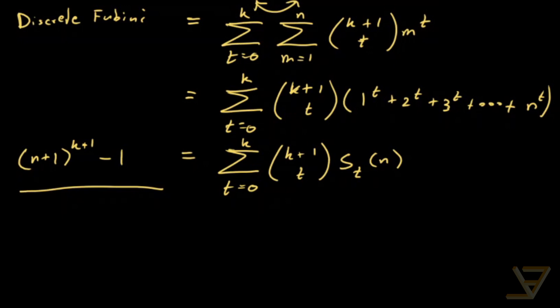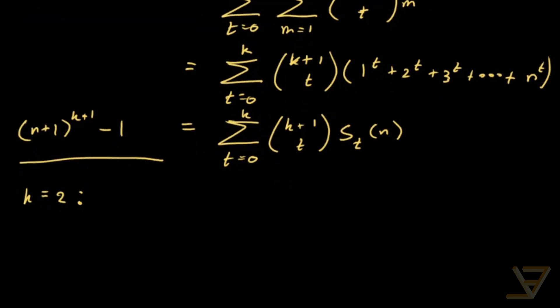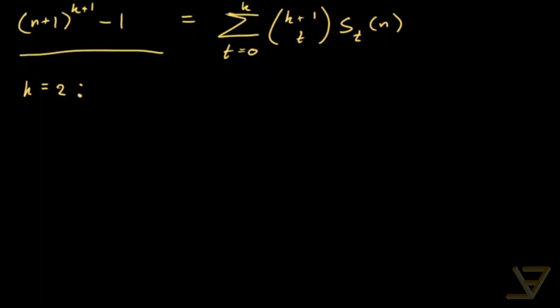Let's do an example to make it clear what's going on. Let's do k equals 2, because we already know the answers for k equals 0 and k equals 1. For k=0 it's just n, and for k=1 it's n times (n+1) over 2 by Gauss's formula. But we don't know k equals 2 yet — the sum of the first n squares — so let's figure that out.